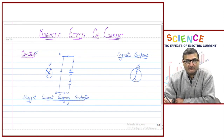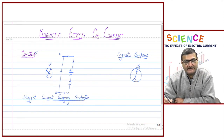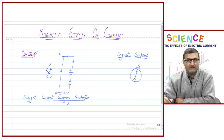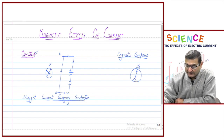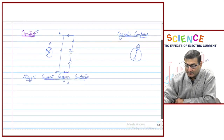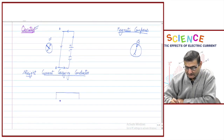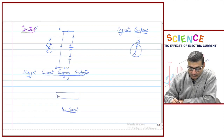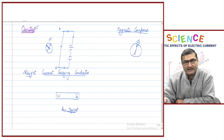It was deduced and observed that current can also produce magnetic effects. Before talking in detail about magnetic effects, let us study a bit about what exactly magnetism or a magnet is. A normal simple bar magnet has two poles — north pole and south pole.